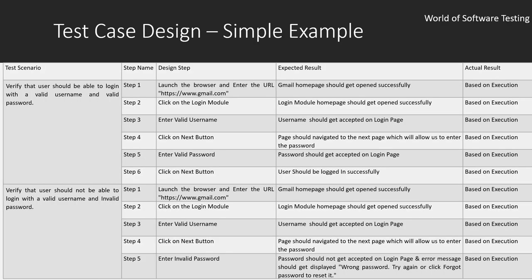This is a simple test case design example. It has certain columns in a standard format that every organization uses. The first column is the test scenario — whatever scenarios are identified, we write test cases for those. The second column is the step name, where we mention step 1, step 2, step 3 sequentially. The third column is the design step — the steps to navigate to the particular functionality. Then comes the expected result for each design step, which comes from the client requirements.